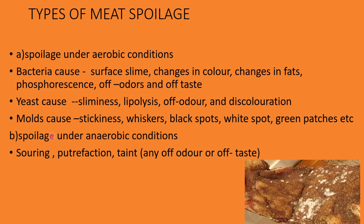Coming to the second type — spoilage under anaerobic conditions — both facultative and obligate anaerobic bacteria grow within the meat and cause spoilage. The anaerobic spoilage of meat includes souring, putrefaction, and taint. Any off-odor or off-taste is called taint, and souring implies a sour odor and taste.